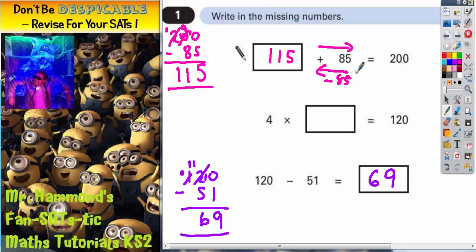115 add 85 equals 200. You want to do a quick check to make sure it gets you back to 200. 5 and 5 is 10, carry the 1. 1 plus 8 is 9, plus 1 is 10. 0 in, carry the 1. 1 plus the 1 we're carrying is 2. So it does indeed get you back to 200, so it must be 115.